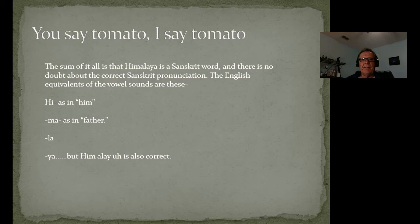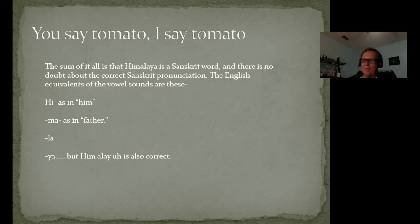The Himalaya is a Sanskrit word, and there is no doubt about the correct Sanskrit pronunciation. The English equivalents are 'him,' 'ma' as in father, 'la,' and 'ya' — so Himalaya. However, Himalayas is also correct. Just a little semantics, but if you want to sound smart, you say it's actually Himalaya.